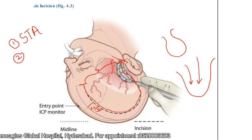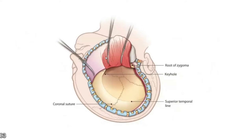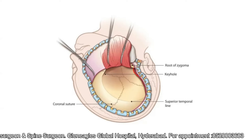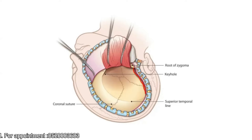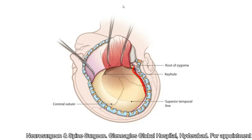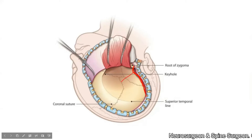Once the incision is developed, hemostasis is achieved. Now you will have to deal with the temporalis muscle. We incise the temporalis muscle — I prefer to incise with a monopolar along the posterior edge of the incision as shown in the picture. Once I incise this, I use a periosteal elevator to separate the muscle.